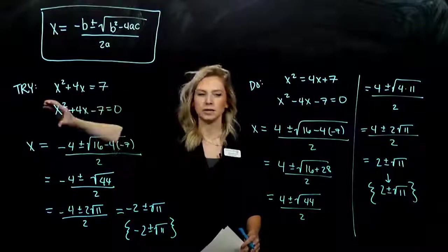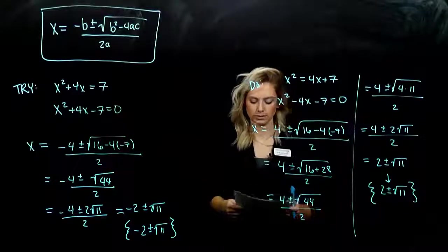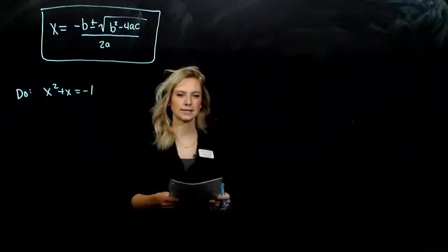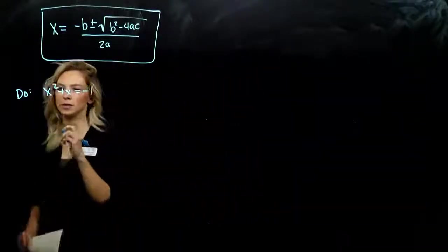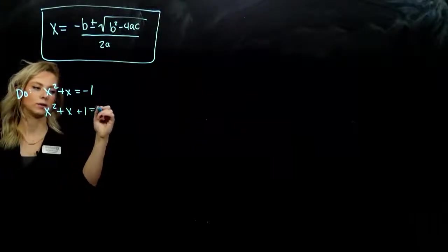So our solution set in the end here, negative 2 plus or minus root 11. So those signs are super important. Very important to remember. Remember, we need it in that form in the very beginning. Everything set equal to 0.